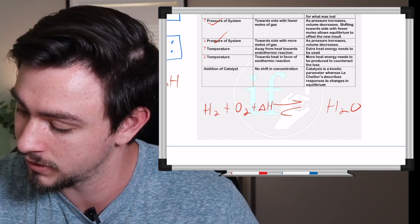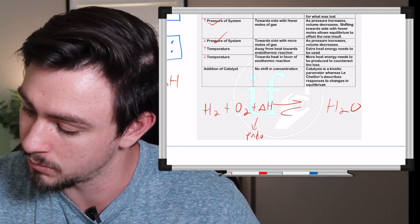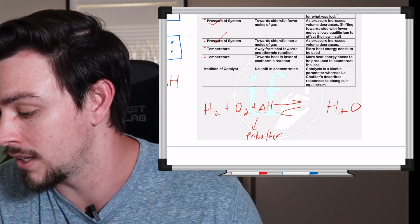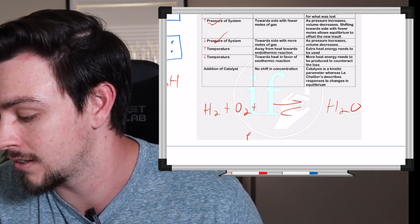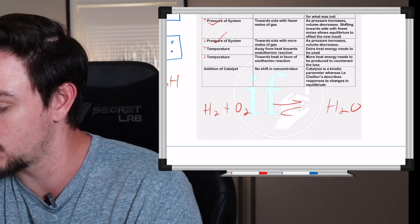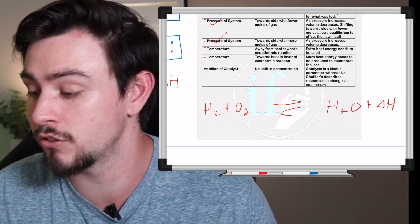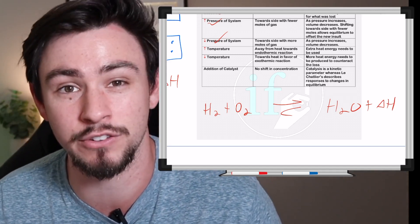Endothermic. Now if you have an exothermic, meaning it releases heat, well then you're going to add heat to the side of your equation that is the products. Now once you've done that, you can just treat heat like it's a concentration.